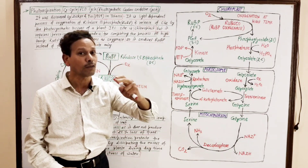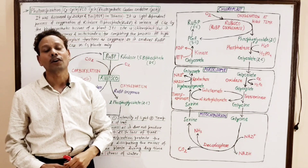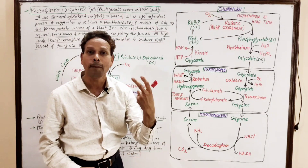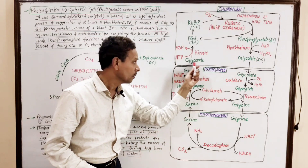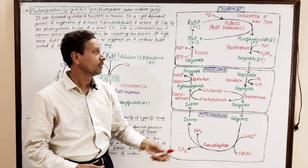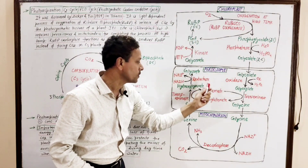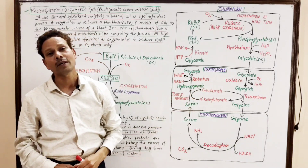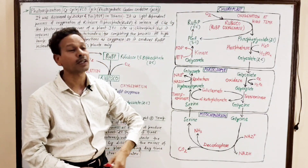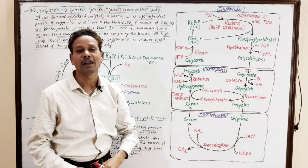In C3 plants, this C2 cycle or photorespiration takes place. The main site of this cycle is the chloroplast. But for the completion of photorespiration, peroxisomes and mitochondria are also required. So three cell organelles — chloroplasts, peroxisomes, and mitochondria — are all involved in photorespiration.